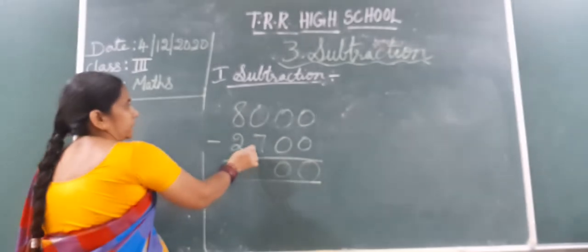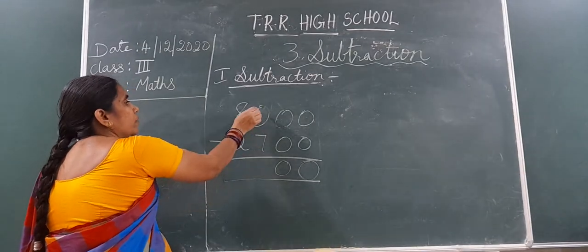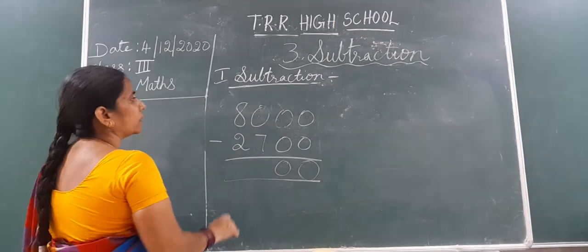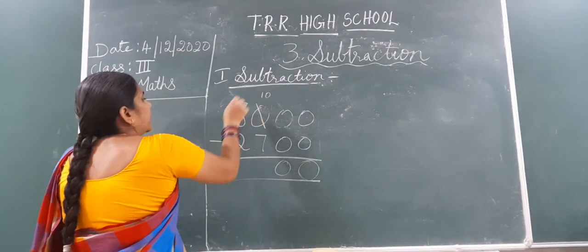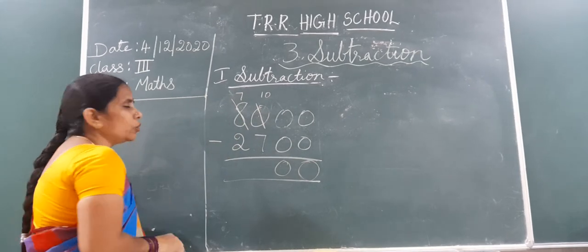Now, go to the hundreds. Here 0 is there. Here 7 number is there here. So, from 0, 7 you can't subtract it. So, what you will do? You take borrow and immediately 8 you cut and write 7. Now, how we will do? Close fingers.